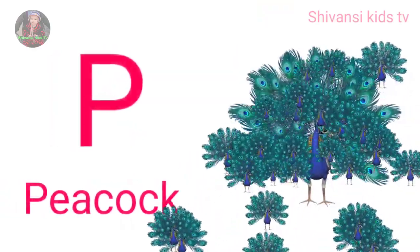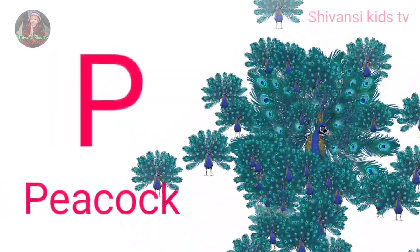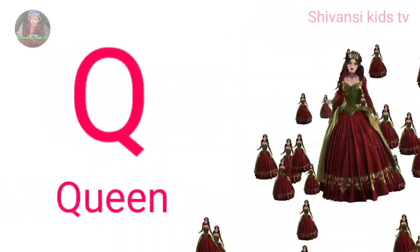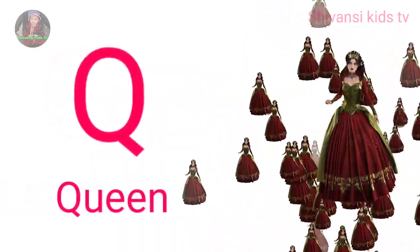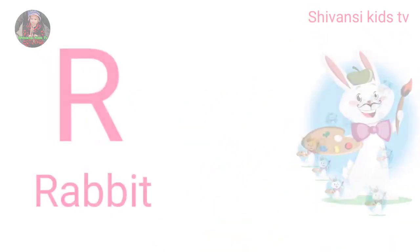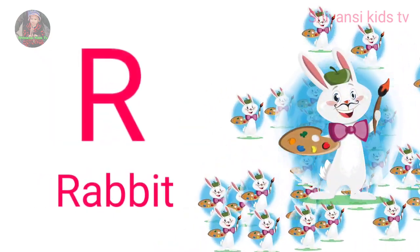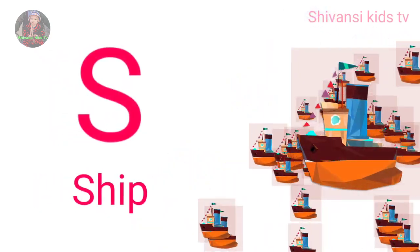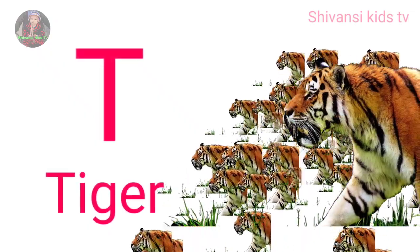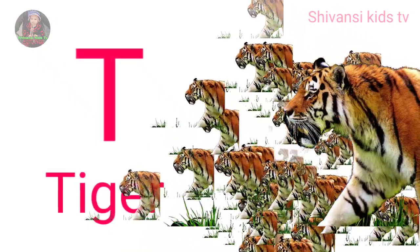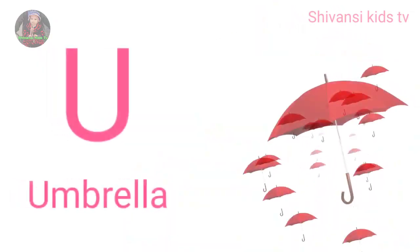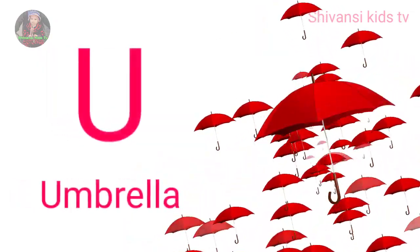P for peacock, Q for queen, R for rabbit, S for sheep, T for tiger, U for umbrella.